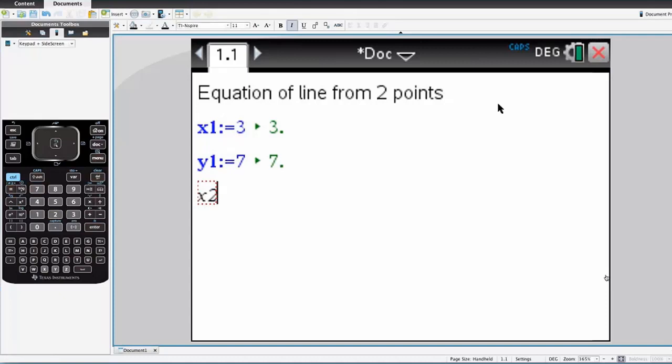And here's the second point, x2 and y2. So we've now got the coordinates of these two points. And these are things that a user would enter in. Now we'll look at the formula for calculating the gradient,